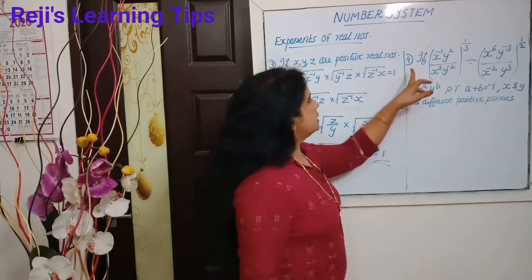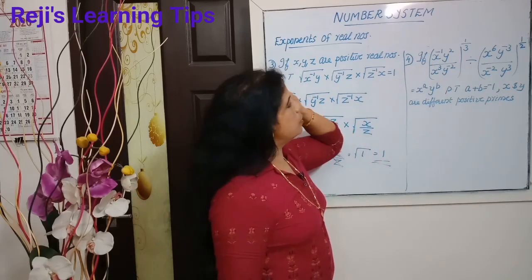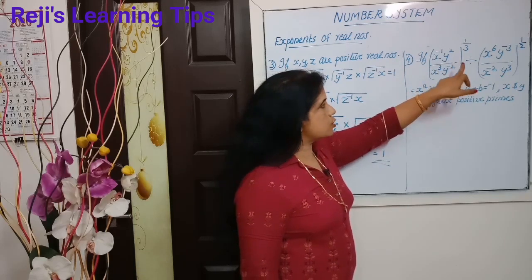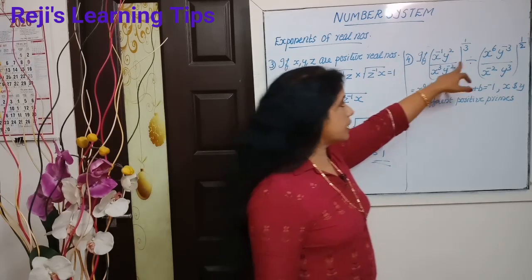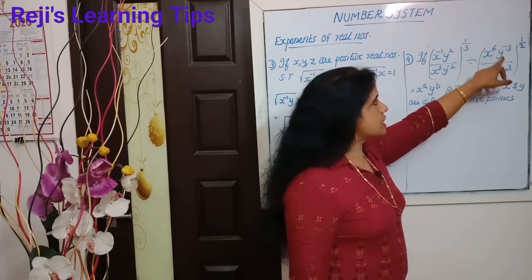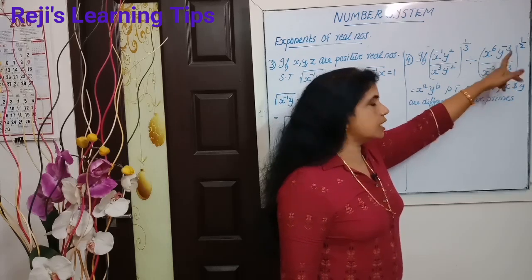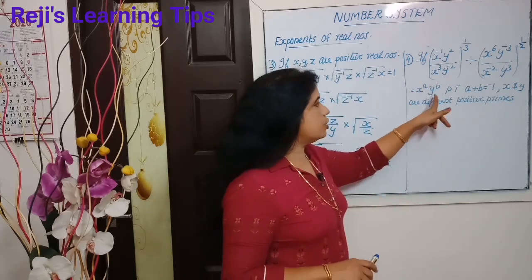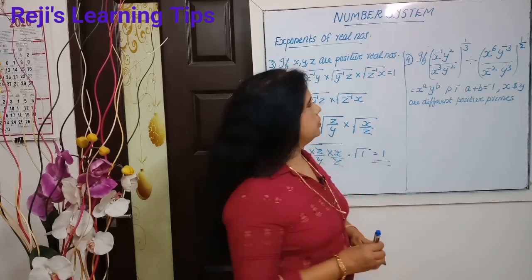Okay, so let's look at the fourth question. If x raised to minus 1 into y squared, divided by x raised to 3 into y raised to minus 2, the whole raised to 1 by 3, divided by x raised to 6 into y raised to minus 3, divided by x raised to minus 2 into y raised to 3, the whole raised to 1 by 2, that is equal to x raised to a into y raised to b. Prove that a plus b is equal to minus 1.